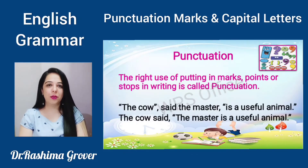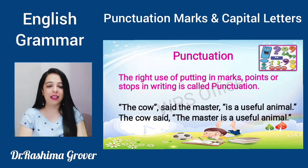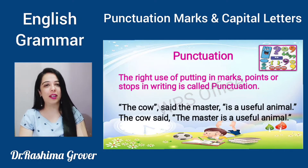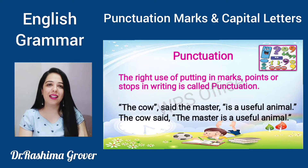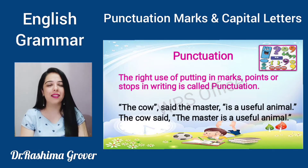Now look at these two sentences. First one is: 'the cow, said the master, is a useful animal.' First sentence ka meaning kya hai? Master ne kaha — the cow is a useful animal. You can see here inverted commas and commas. In the next sentence it is: 'the cow said, the master is a useful animal.' Second sentence means the cow says the master is a useful animal.